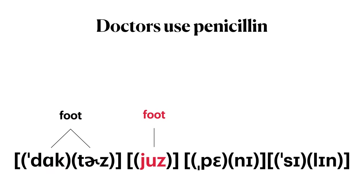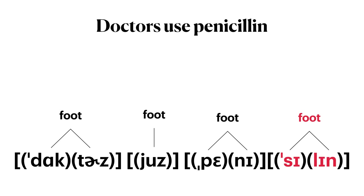The second foot is comprised simply of a single syllable: 'use.' The third foot is the first two syllables in 'penicillin' — the lightly stressed first syllable 'pe' and the second unstressed syllable 'ni.' The final foot in this sentence is the last two syllables in 'penicillin.' Square brackets are used by convention to mark the beginning and end of each foot. In this sentence, we have five feet: doctors, use, pe, ni, cillin.